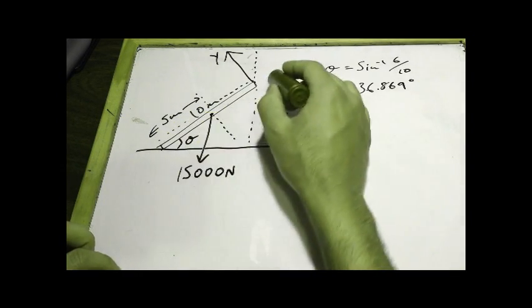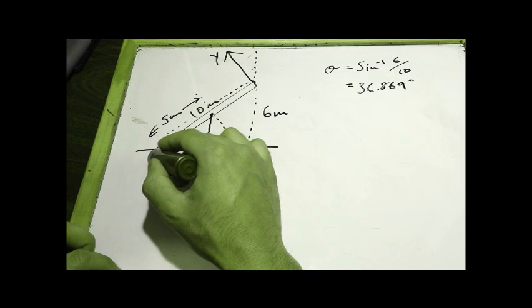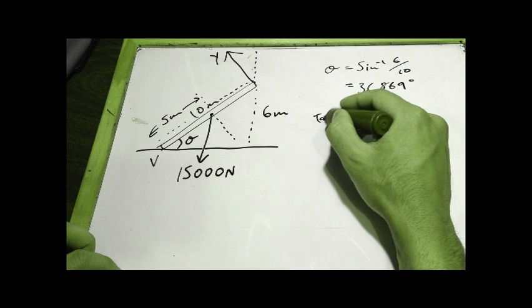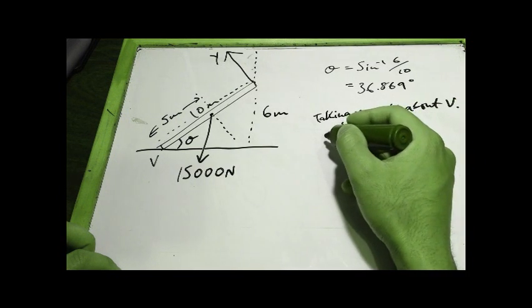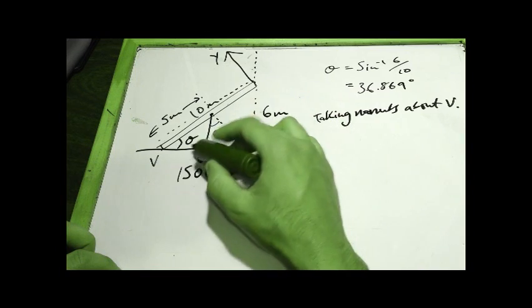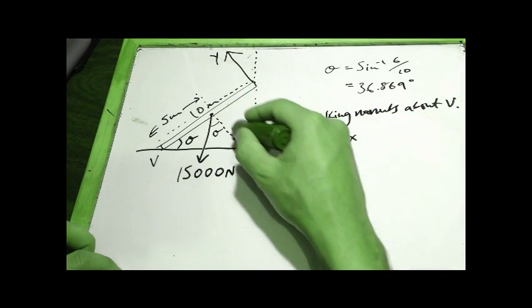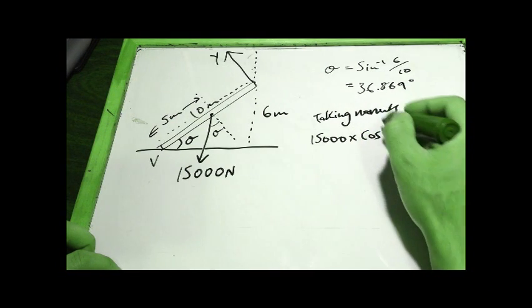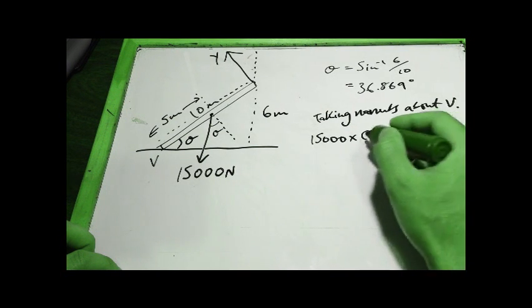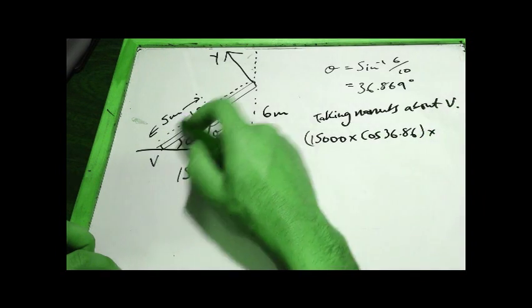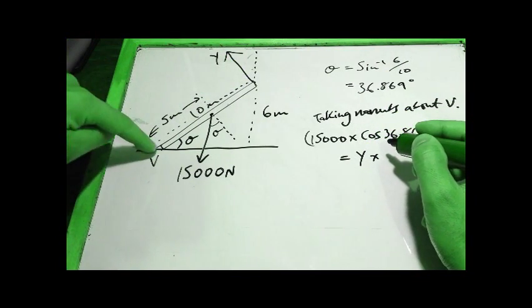I'm going to take moments about, let's just call this point, let's call it point V. So taking moments about V, so I've basically got an angle here, V tables are going to be the same as that, so I'm going to have 15,000 times by the cos of this angle, because I want it perpendicular to the girder, so cos 36.869, and that particular moment, so that's the force there, times by its distance, which is 5 meters away, that will equal Y, the force Y times by its perpendicular distance away from the pivot, which is 10 meters.